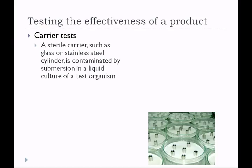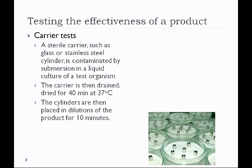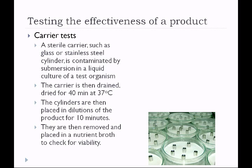The first type of tests are called carrier tests — the oldest tests used. They use a sterile carrier such as a glass or stainless steel cylinder contaminated by submersion in a liquid culture of a test organism. The carrier is drained and dried for 40 minutes at 37°C, then placed in dilutions of the product for 10 minutes. The cylinders are removed, placed in nutrient broth, and checked for growth or viability.